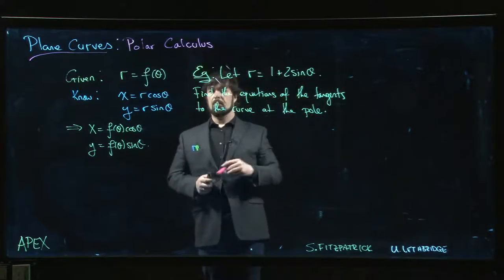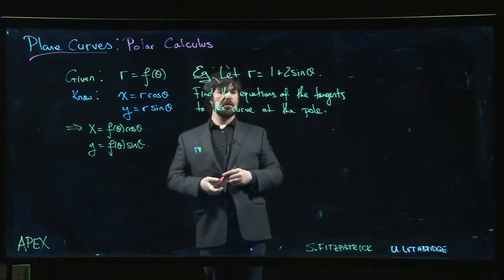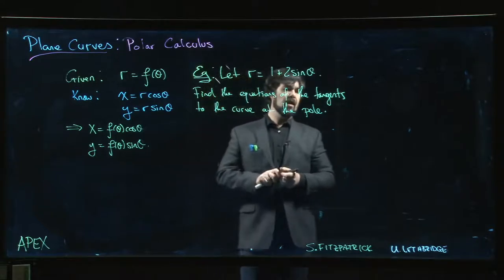Here's our next example. We want to find equations of the tangent lines to this curve here. This is another Limasson at the pole.